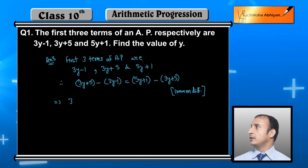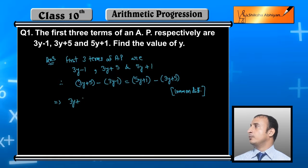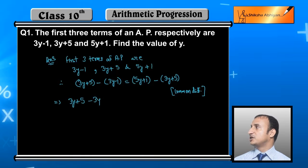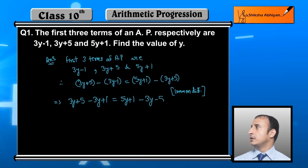So this is 3y+5 minus (3y-1) equals 5y+1 minus 3y. Opening the bracket gives minus 3y, and minus minus gives plus 1. The 3y and minus 3y cancel out.